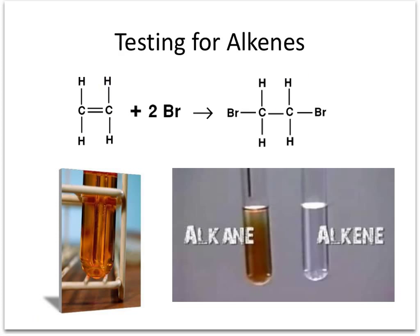There is a test to determine whether a substance is an alkane or an alkene, and it involves bromine water. Bromine water contains bromine atoms dissolved in H2O. Normally it is a reddy-brown colour. If you add an alkane to it, there is no reaction — it stays reddy-brown — because the alkane is a saturated molecule and there is no space for the bromine to react with it.